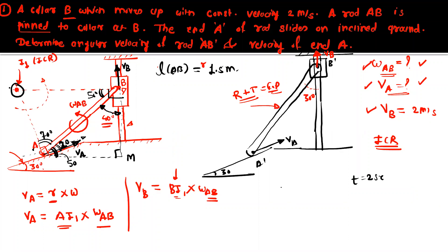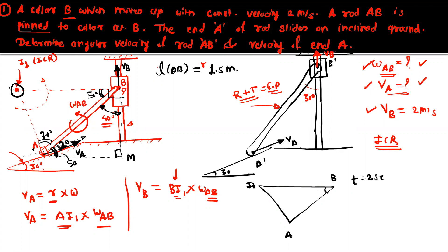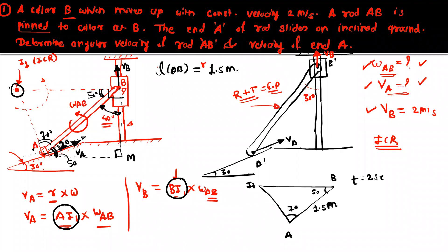So in triangle I1BA: I1 is the ICR, B and A are the rod endpoints. Angle at B is 50 degrees, angle at A is 70 degrees, and AB = 1.5 meters. Using the sine rule, AI1 = 1.327 meters and BI1 = 1.627 meters. Now using these distances with the known VB = 2 m/s, we apply the relation VB = BI1 × Omega_AB.